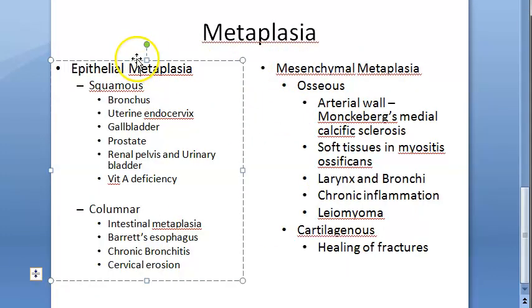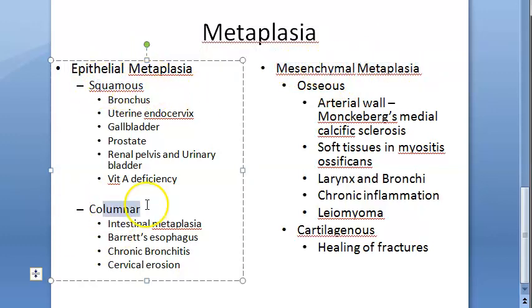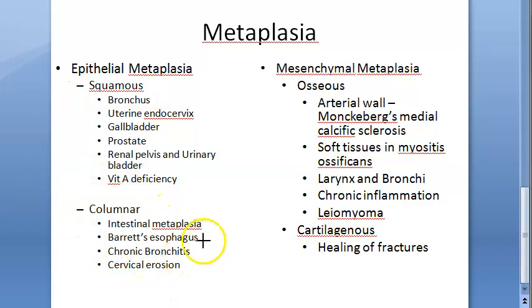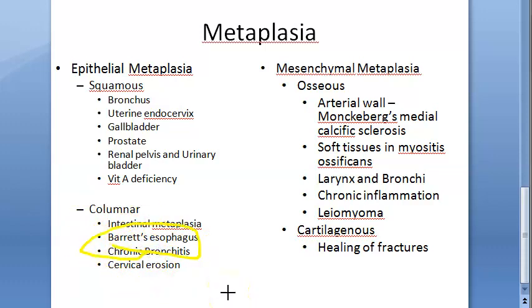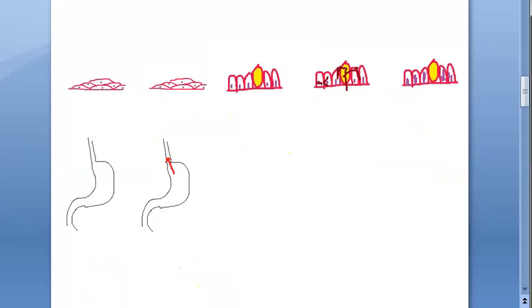In metaplasia there are two types: epithelial metaplasia and mesenchymal metaplasia. Under epithelial metaplasia you have squamous metaplasia and columnar metaplasia. In columnar metaplasia, the classic example is Barrett's esophagus, where the squamous epithelium of the esophagus is converted into columnar epithelium. Let us look at Barrett's esophagus to understand what metaplasia means.